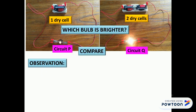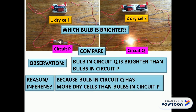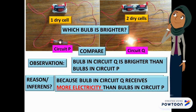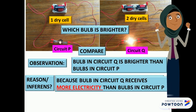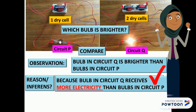For observation, please compare which bulb is brighter. The answer is the bulb in circuit Q is brighter than the bulb in circuit P. Is it because circuit Q has more dry cells? No, that is not the answer. The answer is because the bulb in circuit Q receives more electricity than the bulb in circuit P.